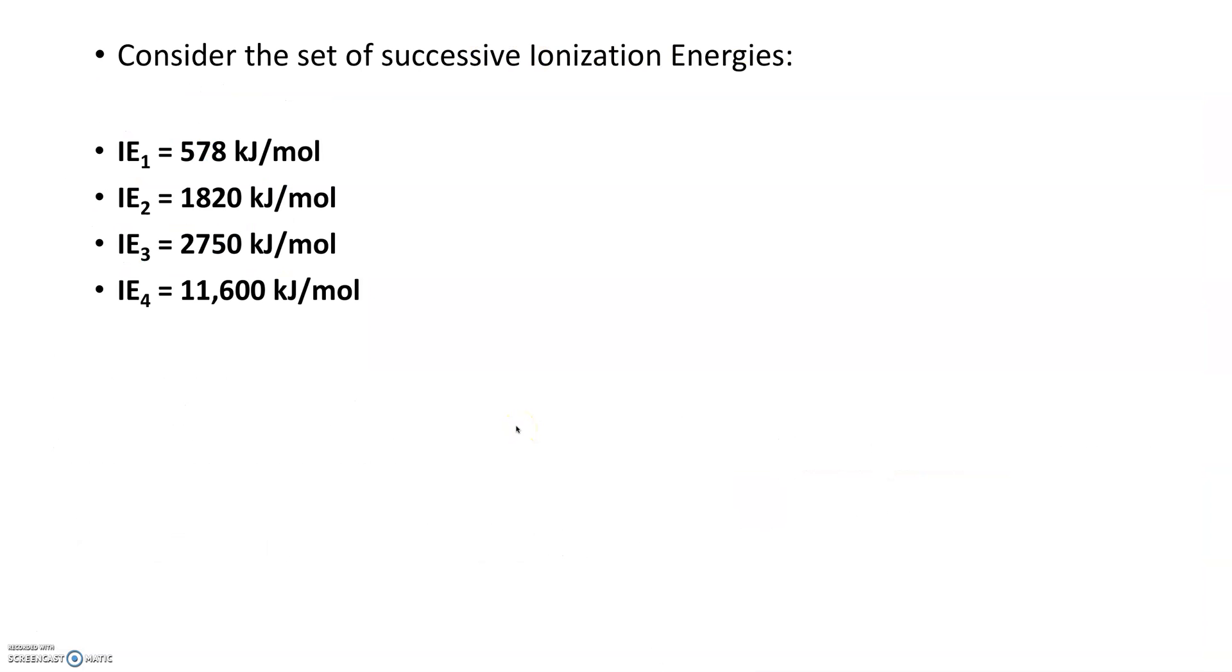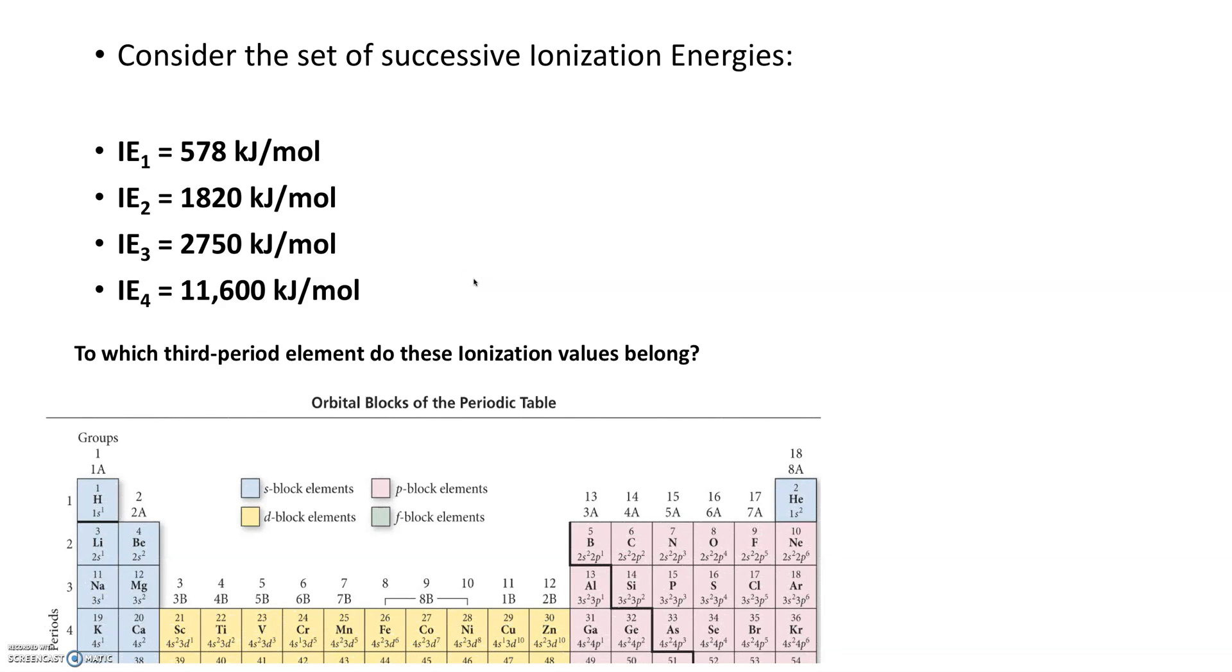So for this actual problem, we're applying everything in that table, and we're trying to understand it. So let's consider the set of successive ionization energies. So the problem gives me the first ionization requires this much energy, the second requires this much, the third this much, the fourth this much. So you could always go to the table, refer, and help figure it out. But let's say you didn't have that table I just showed you. The problem also reads to which third period element do these ionization values belong. So if you don't have that table, you could still figure this out. How? Well, you always have a periodic table. So this is third period, so here is my third period, right? Here is the third period right here.